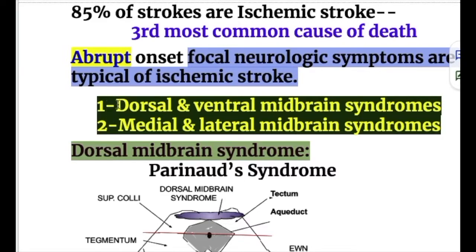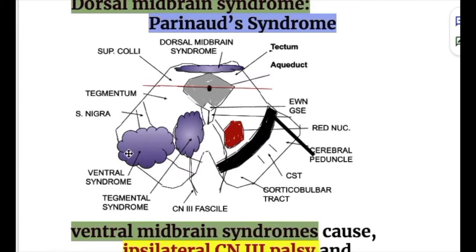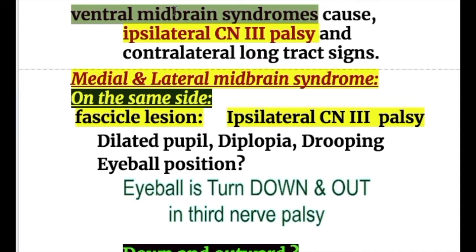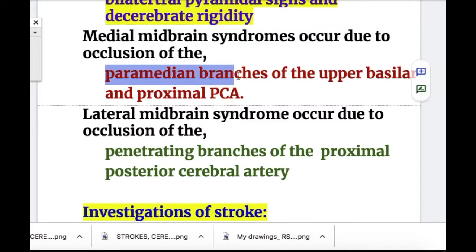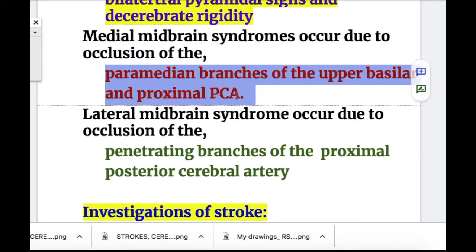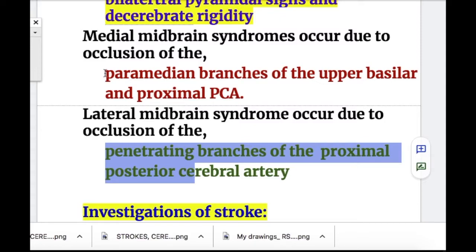The midbrain syndromes may be divided into dorsal and ventral midbrain syndromes, and the ventral midbrain syndrome may be further divided into medial and lateral types. The dorsal midbrain syndromes involve the tectum — the posterior part or roof of the midbrain — known as Parinaud syndrome, covered in a separate video. Medial midbrain syndrome occurs due to occlusion of the paramedian branches of the upper basilar and proximal posterior cerebral artery, whereas lateral midbrain syndrome occurs due to occlusion of the penetrating branches of the proximal posterior cerebral artery.